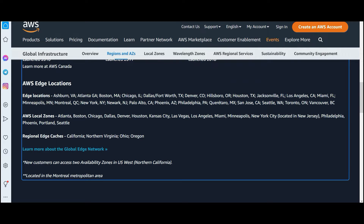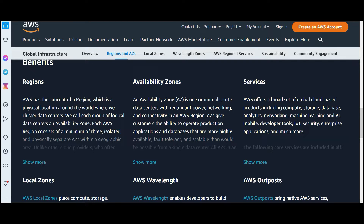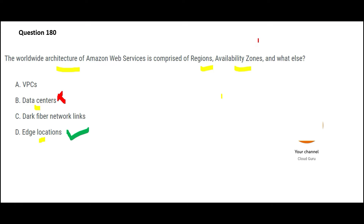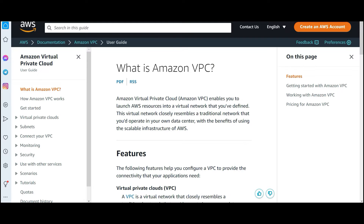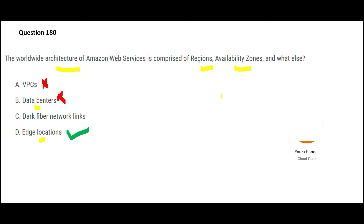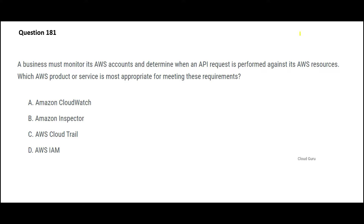Edge locations are situated in many locations. You can pause the video and read this section carefully — what are regions, what are AZs, and what are services? D is my final answer. Data center is wrong because a data center is a part of an AZ, not a separate entity. VPCs are used to launch AWS resources in your virtual network — that's wrong in this context. Data fiber network links are used for Direct Connect, not the global building blocks. The first important building blocks are regions, AZs, and edge locations.